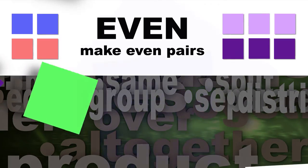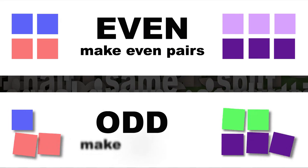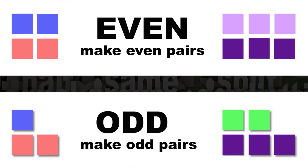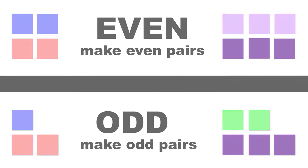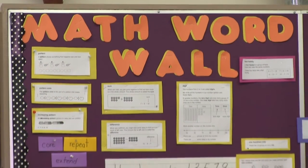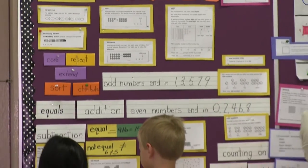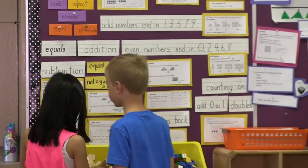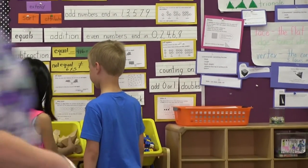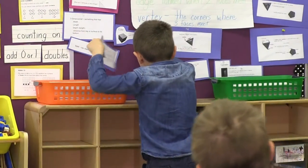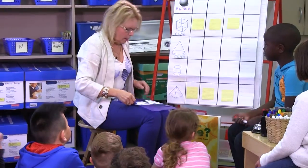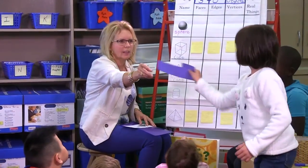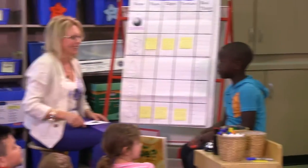Math communication is more than just words. When you display a math vocabulary word, include a picture or diagram to go along with it. This greatly supports our English language learners and low-cognitive students. Your math word wall is an important scaffold for students. If they're working on writing their thoughts and can't spell a word, they can find it on the wall. If they can't remember how to draw a bar graph, they can find an example on the wall. These walls need to be a living part of your classroom, interactive and ever-changing.